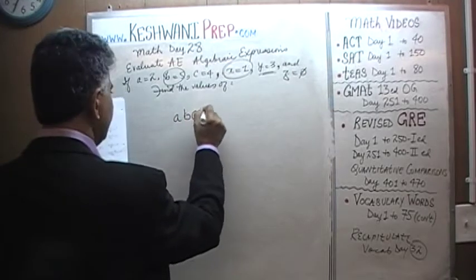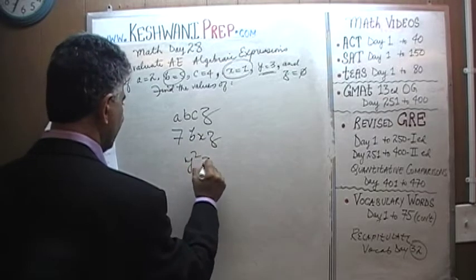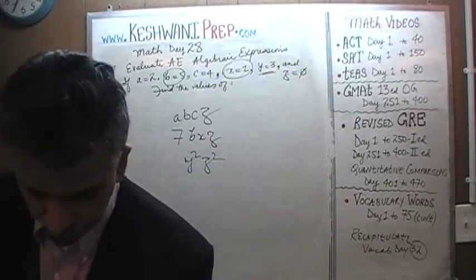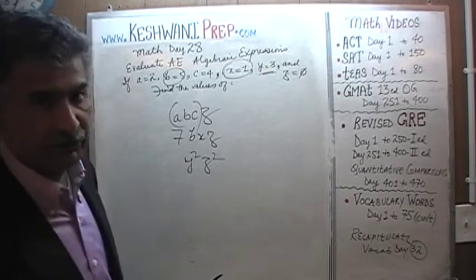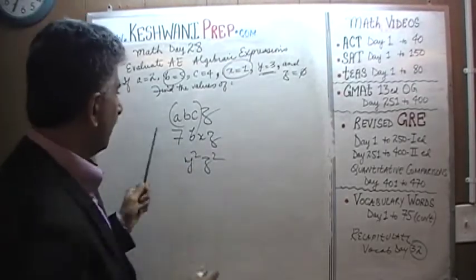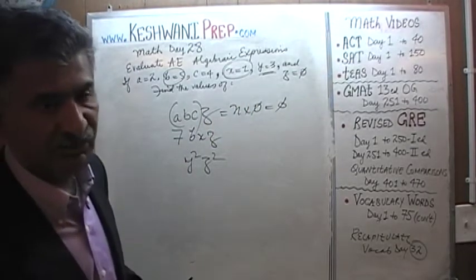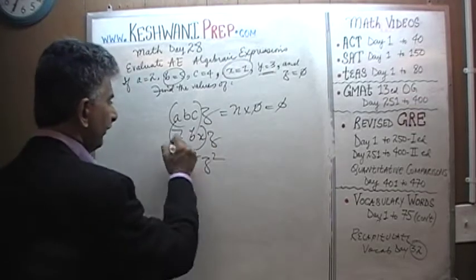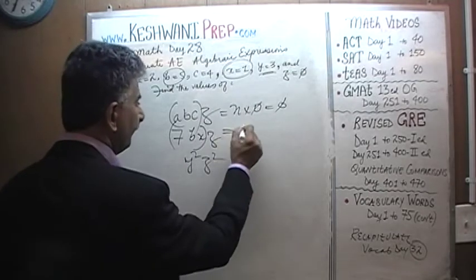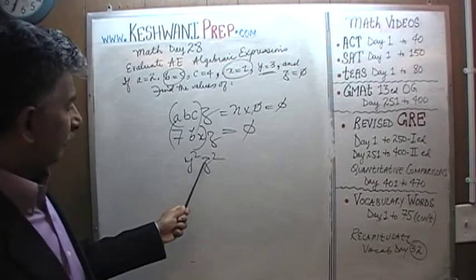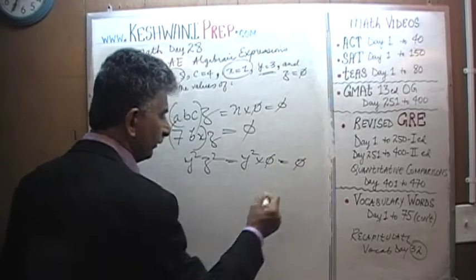A times B times C times Z. 7 times B times X times Z. And Y squared times Z squared. What do you notice? What we notice is that it doesn't matter what A times B times C is. We don't have to waste our time figuring it out. Again, same thing here. It makes no difference what 7 times B times X is. 7 times B times X times 0 is going to be 0. It doesn't matter what Y squared is. Z squared, Z is 0, so it's just 0. It's just Y squared times 0, which is going to be 0.